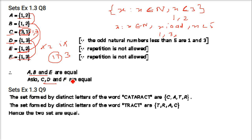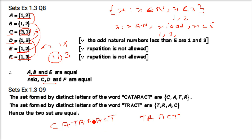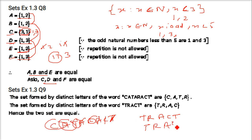Next: show that the set of letters needed to spell 'cataract' and the set of letters needed to spell 'tract' are equal. 'Cataract' is C-A-T-A-R-A-C-T — removing repeats gives {C, A, T, R}. 'Tract' is T-R-A-C-T — removing the repeated T gives {T, R, A, C}. Both sets contain exactly the same letters, so they are equal.